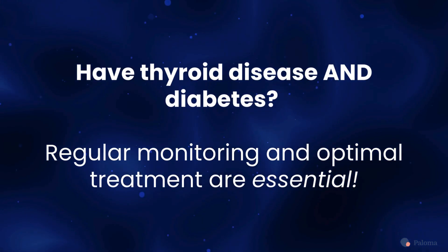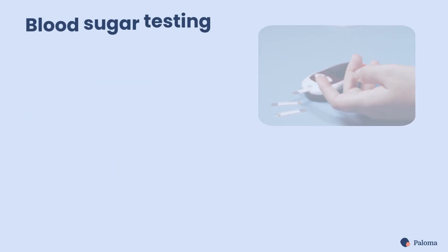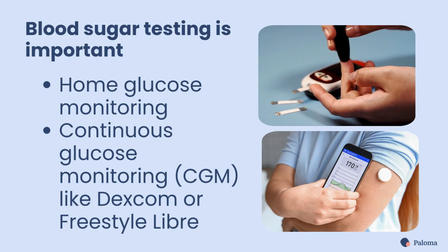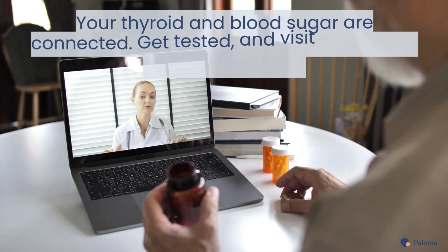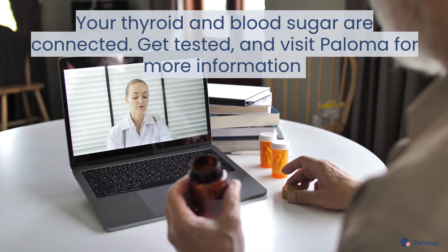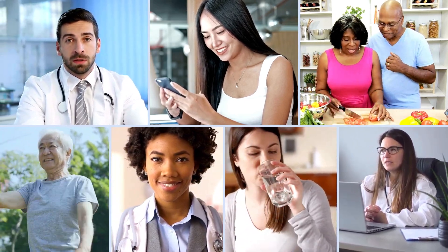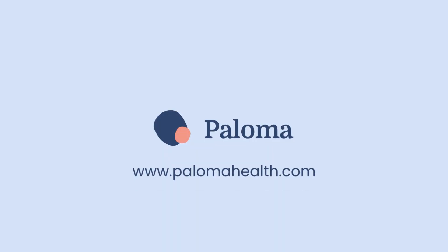If you have both thyroid disease and diabetes, regular monitoring and optimal treatment are essential. That means regular thyroid test panels to monitor your thyroid levels. Paloma Health's complete at-home thyroid test kit can help you monitor your levels without the hassle of frequent lab visits. If you have diabetes, you should monitor your blood sugar levels regularly. Home glucose monitoring or a continuous glucose monitoring CGM device like a Dexcom or Libre can make it easy to keep track. Your thyroid and blood sugar are closely connected — stay proactive and get tested today. Visit Paloma Health to learn more. This video has been brought to you by Paloma Health, the nation's leading medical practice dedicated to hypothyroidism care. Learn more at www.palomahealth.com.